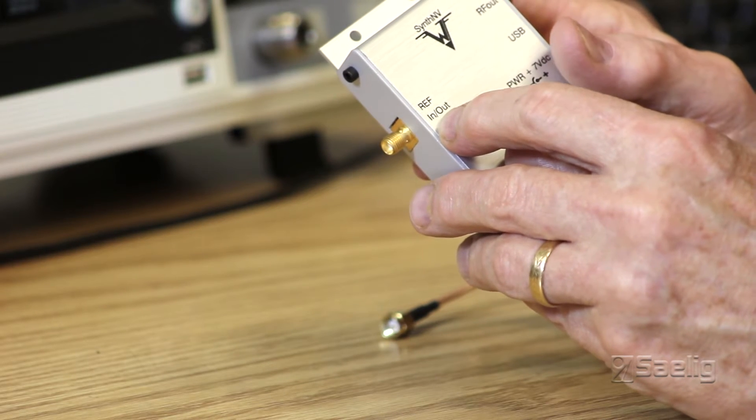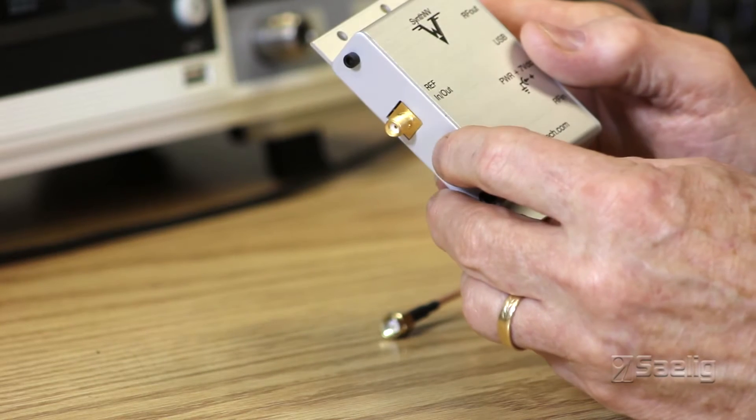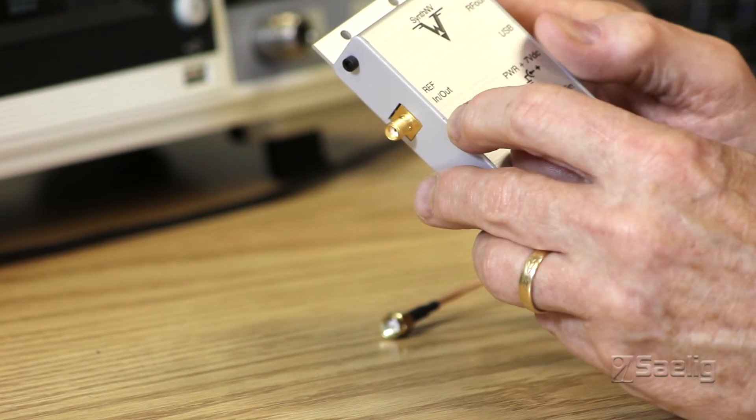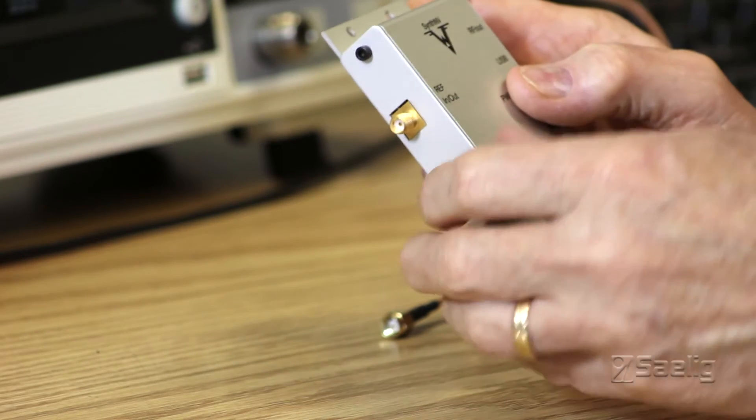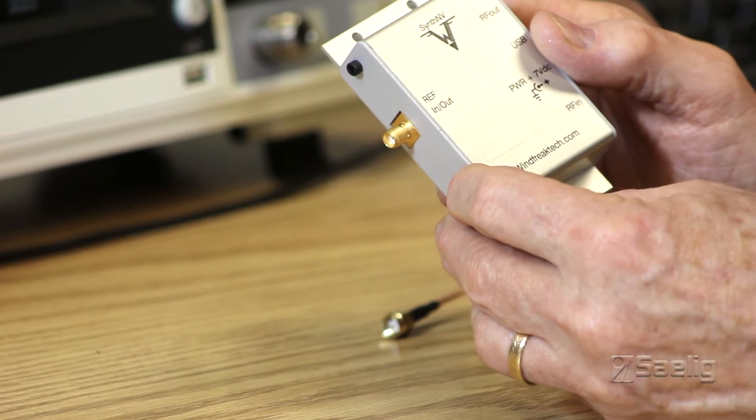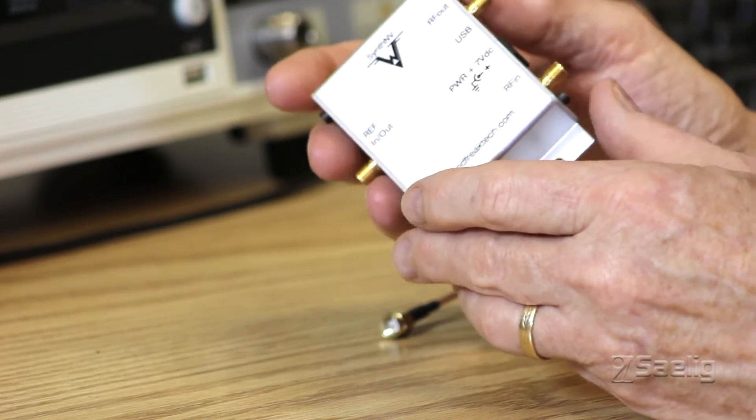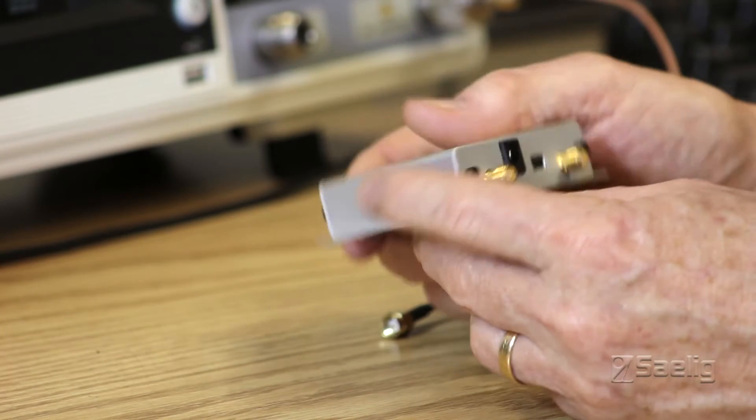If you have a 10 megahertz or other frequency reference you want to pour into this you can switch this thing to an input and then you can tell the PC application what frequency you're using and you can use that if you've got a more stable source. So those are the three input output ports on the thing.